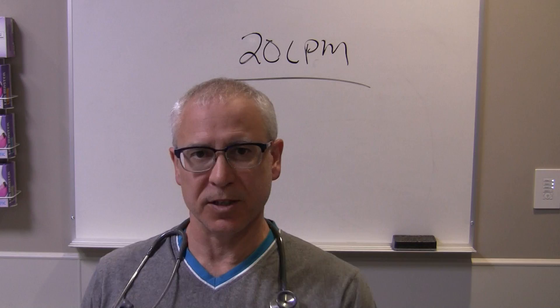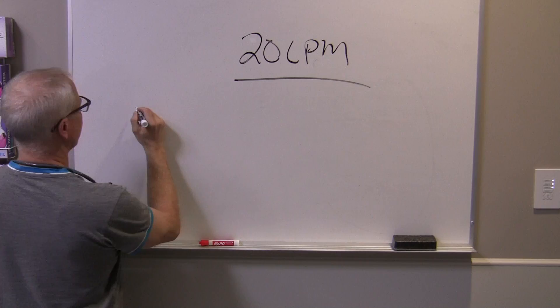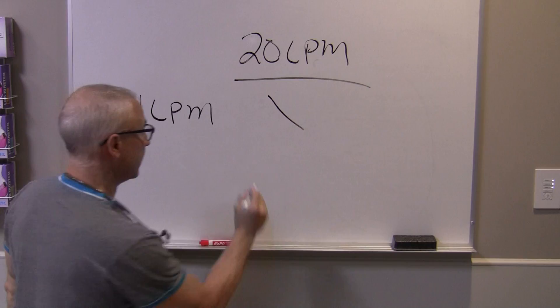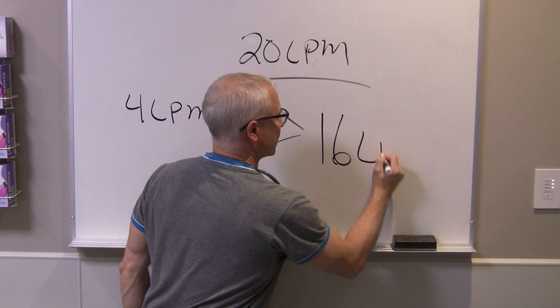So if we're putting an oxygen device on our patient and it's running at 4 liters per minute, what's coming out of that device is 100% oxygen at 4 liters per minute. If your patient is inhaling at 20 liters a minute and the device is giving them 4 liters a minute, where is that 16 liters per minute coming from? It's coming from the room.